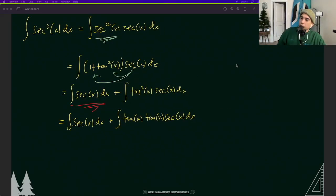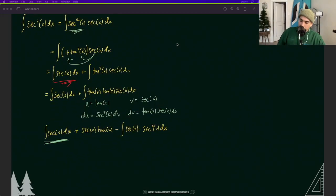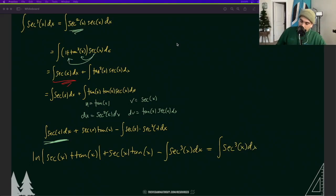Now I'm going to use integration by parts. This integral is going to become natural log absolute value of secant x plus tan x plus secant x tan x. We can rewrite that other integral of secant cubed x dx. We have the same thing, so I'm going to make this equal to the original integral and then just add it to the other side.